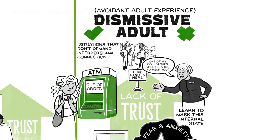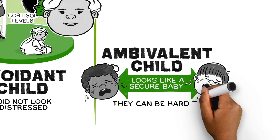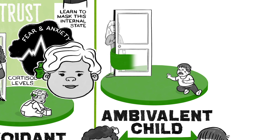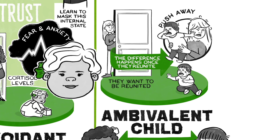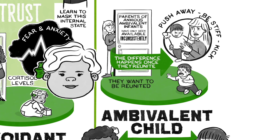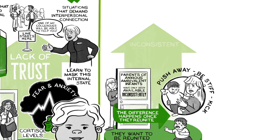An ambivalent baby looks like a secure baby — they can be hard to distinguish. Both babies are distressed when the attachment figure leaves. The difference is what happens once they actually reunite. An anxious ambivalent baby wants to be reunited, but once they're picked up, they may push away a little bit, or they may be stiff, or they may kick their feet. We know from research that parents of anxious ambivalent infants have only been available inconsistently.